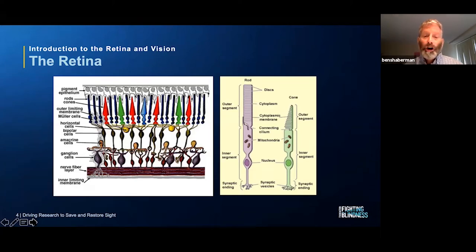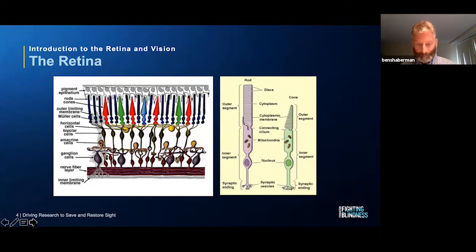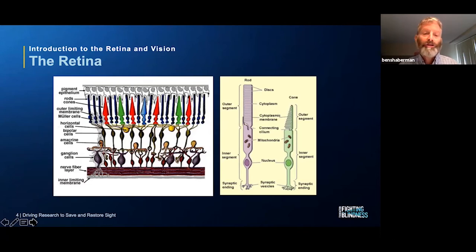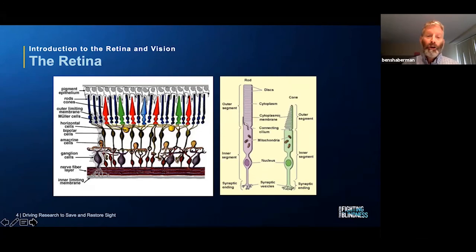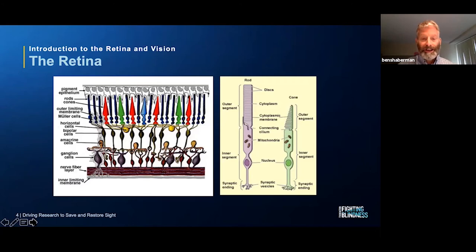RPE cells play a very critical supportive role for photoreceptors. They provide nutrition to photoreceptors and also provide waste management, which we'll be talking about in a few slides. The RPE cells also help absorb scattered light to enhance the visual experience. There are other cells in the retina in the lower layers of this diagram. While they don't actually absorb light like the photoreceptors, they do play a role in our visual experience — helping with things like contrast and movement. Information from the photoreceptors is sent through these cells for further processing and then sent out through the optic nerve to the back of the brain.